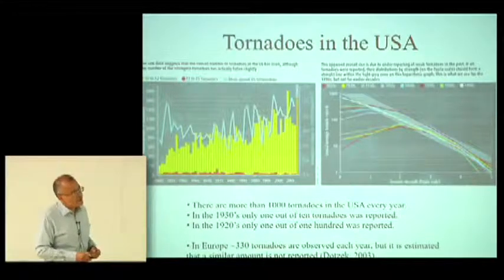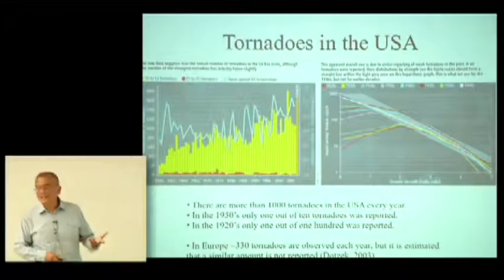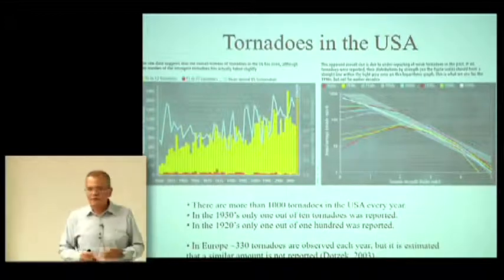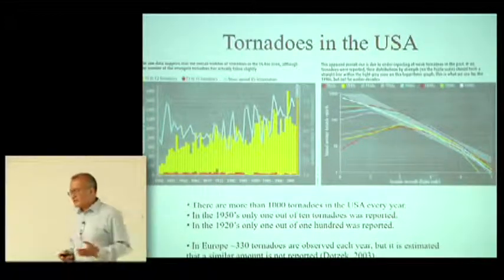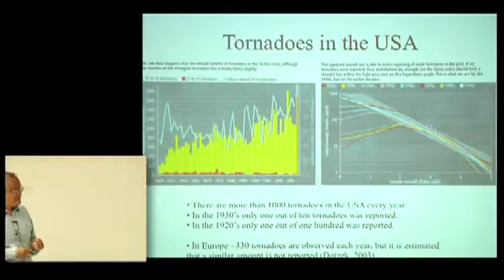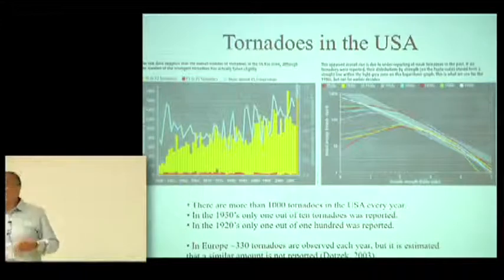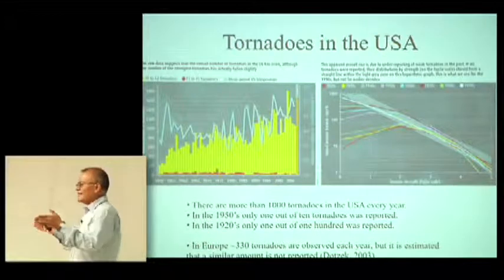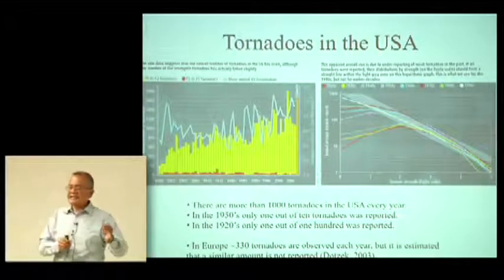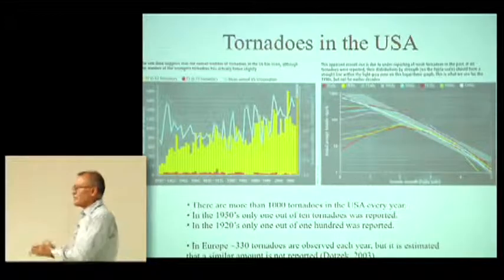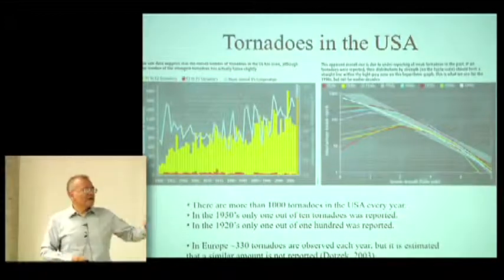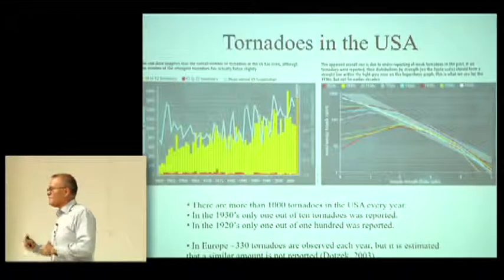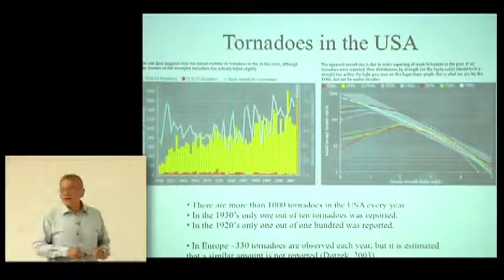The Fujita scale goes from F0, the weakest, to F5, which causes total destruction. When they compiled the databases for tornadoes in the United States and gave the information to different groups, sometimes the same tornado received different classifications — and sometimes the difference was not F4 versus F5, but F2 from one group and F5 from another. That might explain the discrepancies as well.